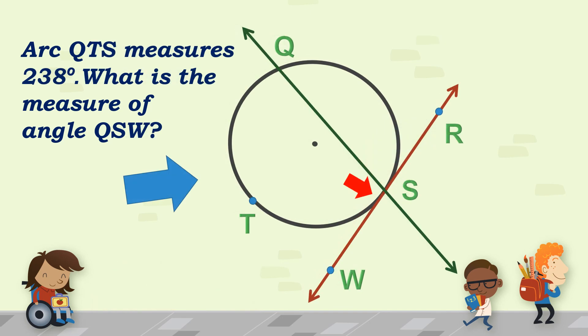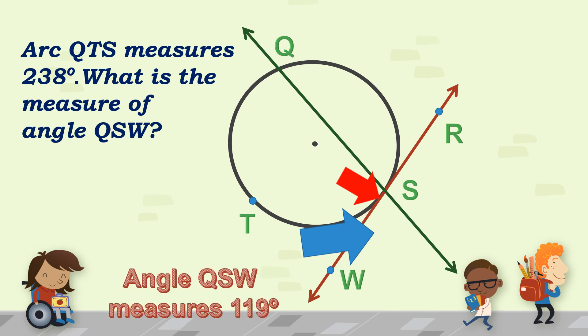For the last example, the given is arc RQTS which measures 238 degrees. We are asked to find the measure of angle QSW. Angle QSW corresponds to arc RQTS with a measure of 238 degrees. To get the measure of angle QSW, divide 238 degrees by 2 — our measure for angle QSW is 119 degrees.